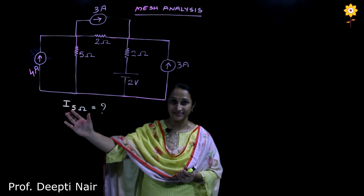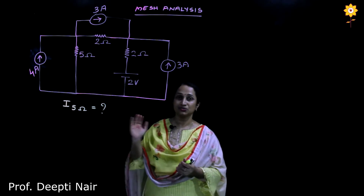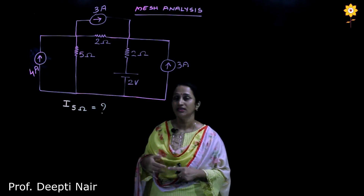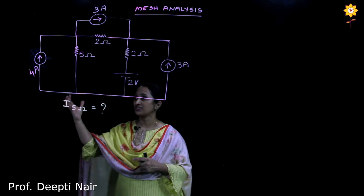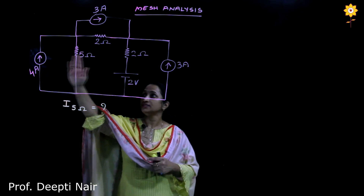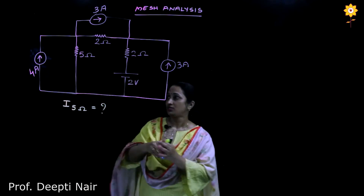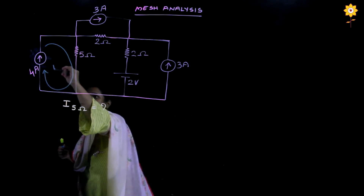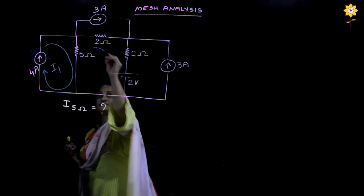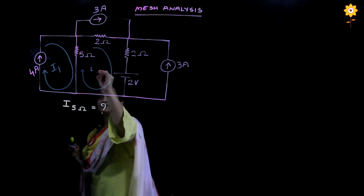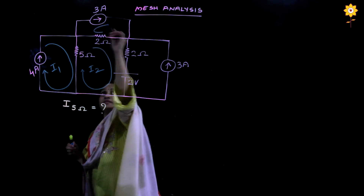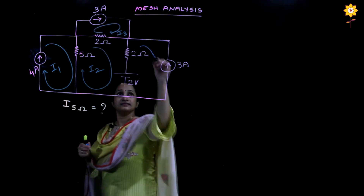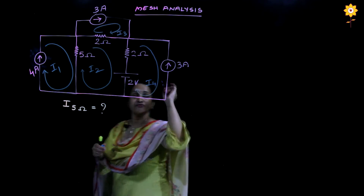We need to find out the current through the five ohm resistor. The first two steps remain the same: identify the meshes and mark the mesh currents. In this case there are four meshes, so let us mark the mesh currents i1, i2, i3, and i4.